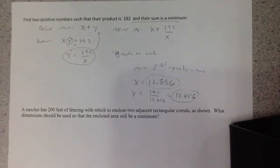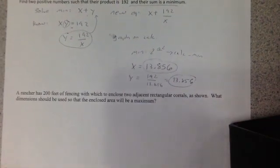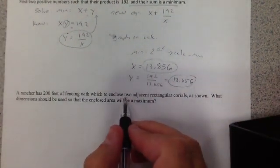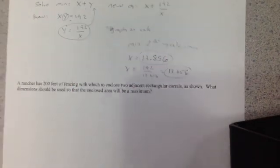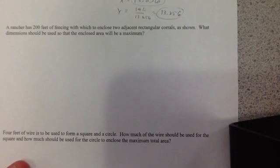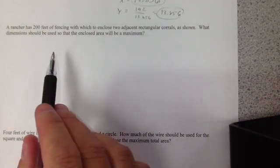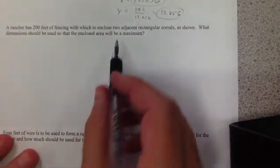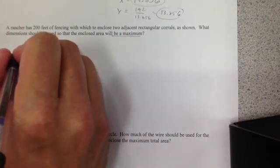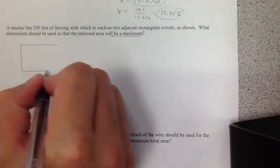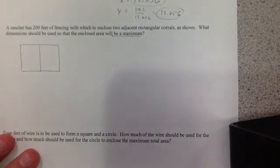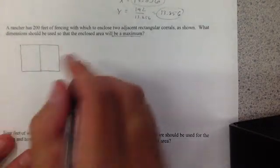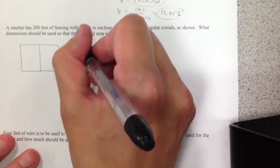The next question deals with a rancher. A rancher has 200 feet of fencing in which he wants to enclose two adjacent rectangular corrals as shown. On your notes, I have it shown for you. The question is what dimension should be used so that the enclosed area will be a maximum. So I'm going to draw my corral here. You already have a picture of it. Two enclosed. It looks something like this.